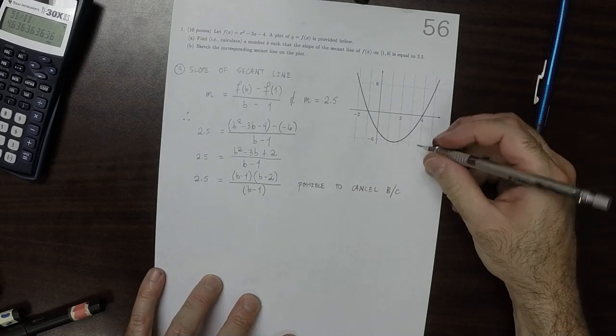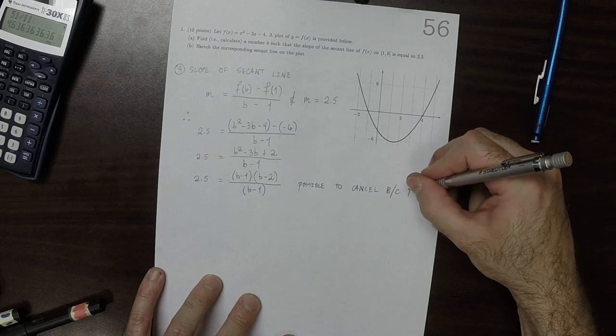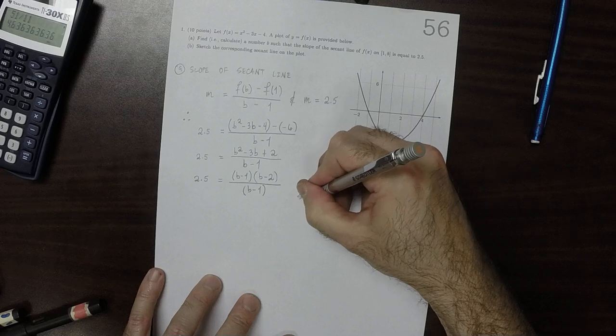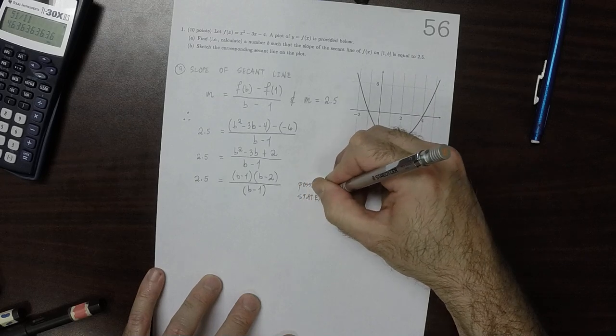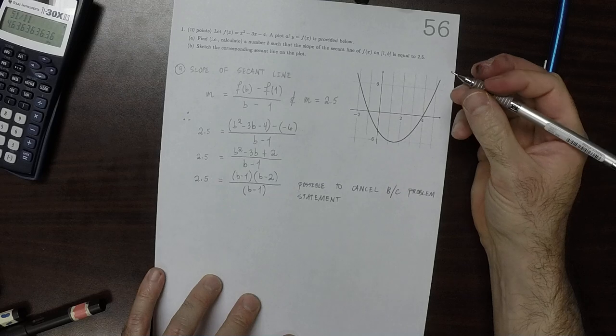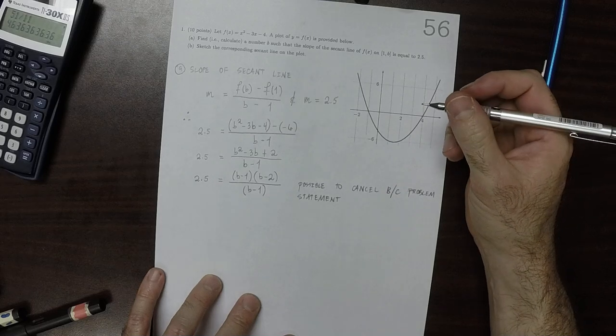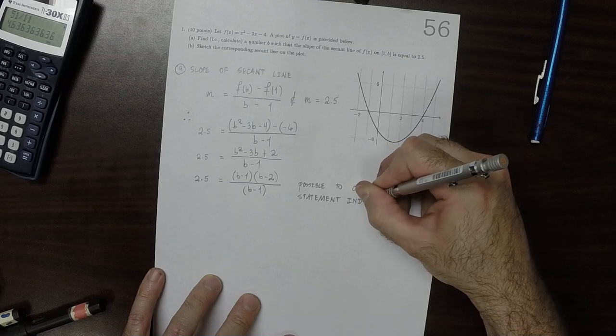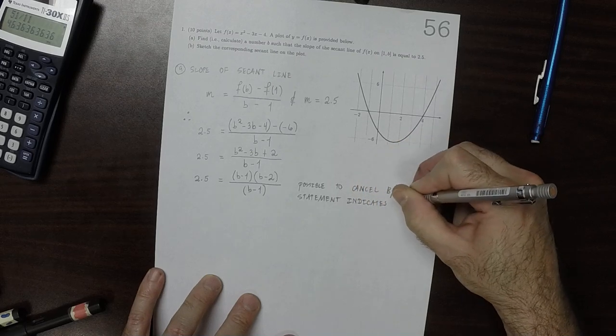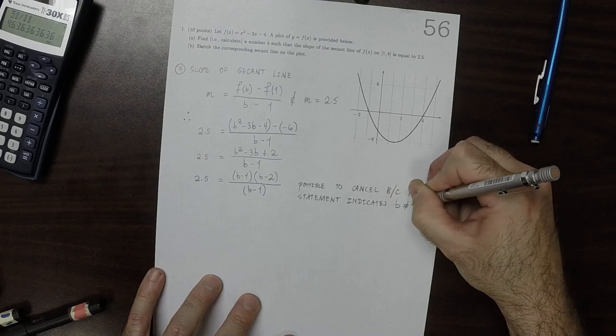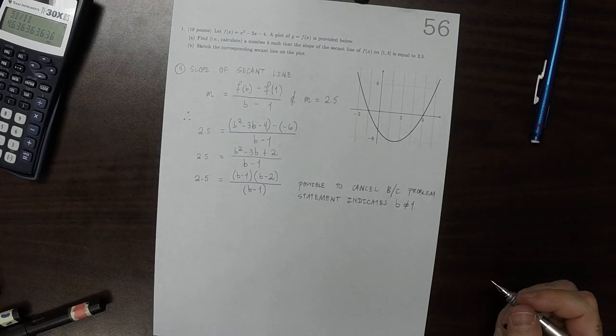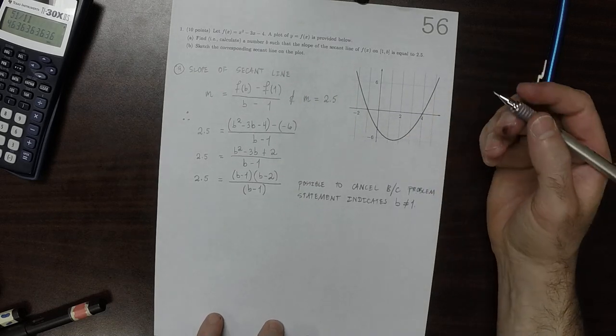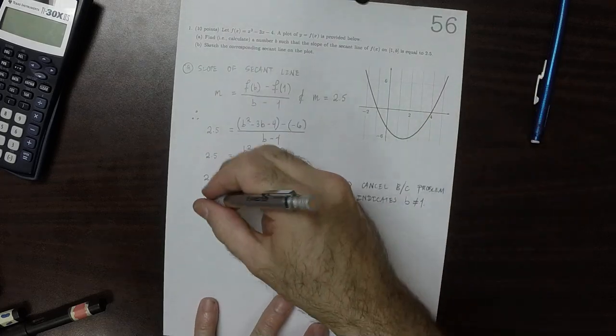Because the problem statement indicates that b is not 1. b couldn't possibly be 1 because then this wouldn't be an interval and it couldn't be a secant line. So we can cancel those.